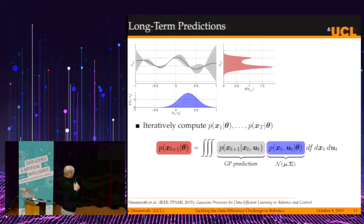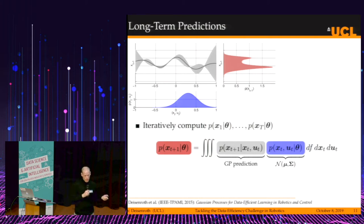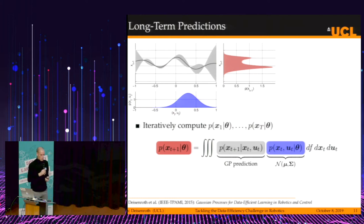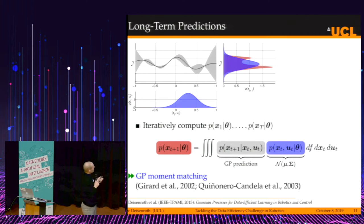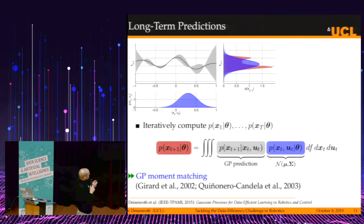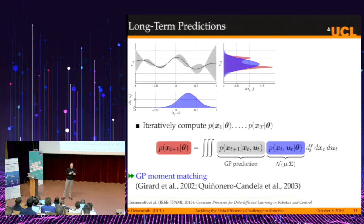If we solve this triple integral, we get the predictive distribution — the shaded area. The problem is we cannot solve this integral in closed form because of various non-linearities. But we can compute the mean and variance of this distribution in closed form and approximate this shaded distribution with a Gaussian. That is a deterministic approximation — we can write down an equation that solves our problem.